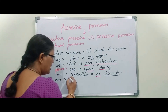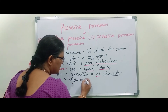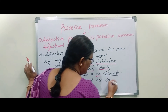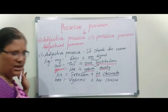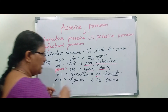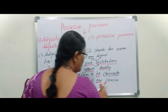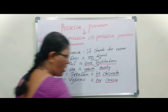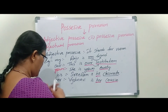Next: 'her.' Vaishnavi is her cousin. Here, 'her' is talking about 'cousin' — whose cousin? It is giving information about this common noun. That's why this comes under Adjectual Pronoun.